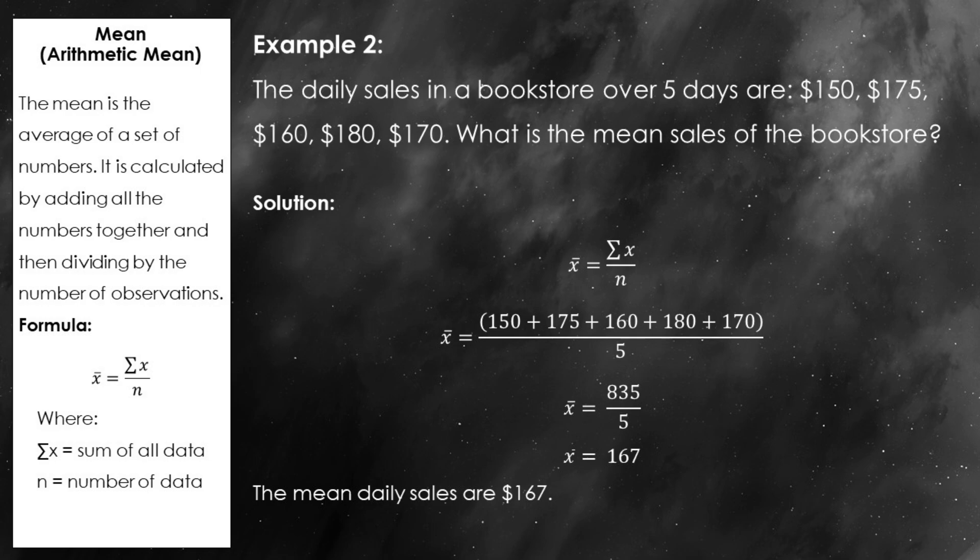The mean daily sales for the bookstore over these 5 days is $167. This tells us that, on average, the bookstore is making $167 per day. Of course, some days might be higher and others lower, but the mean gives us a nice, quick snapshot of the overall sales performance.